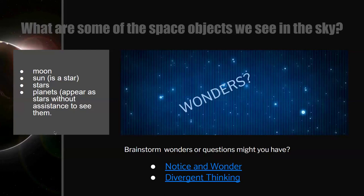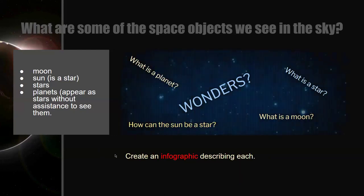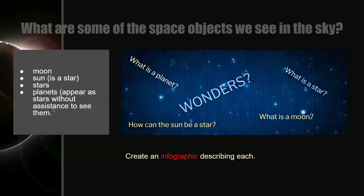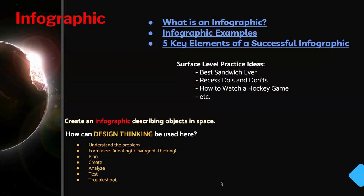Common objects students typically come up with include the moon, the sun, stars, and planets. Brighter circles in the sky might be planets — some students will recognize that. Part of Grade 4 is also how you see things above your head — what tools can you use? Once they've come up with some knowledge, have them do a little research and perhaps create an infographic of what they've learned or the questions they have.